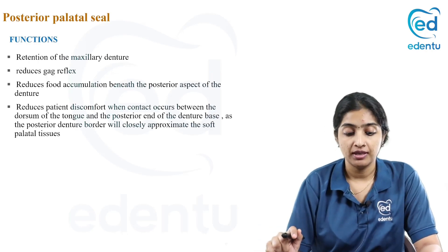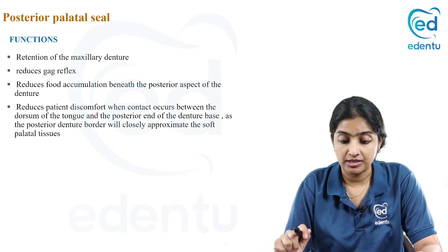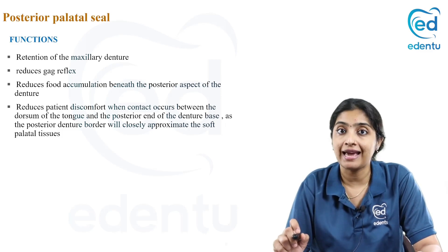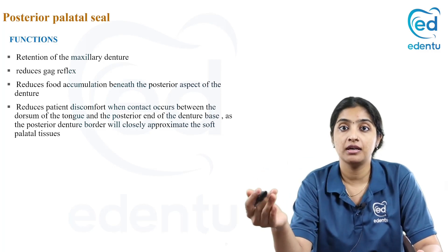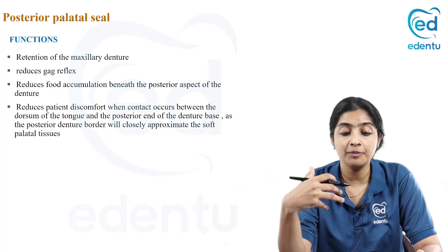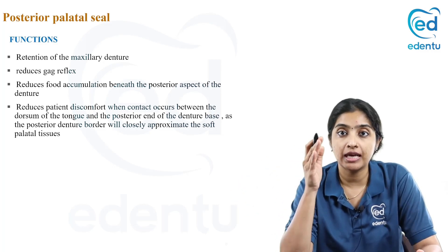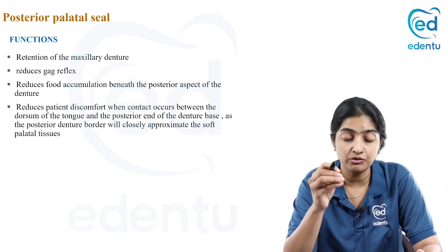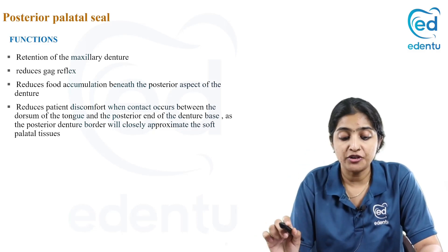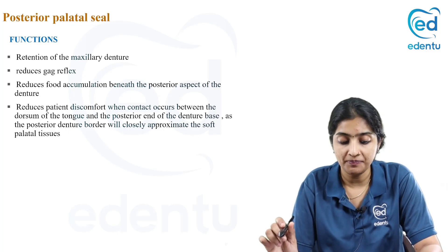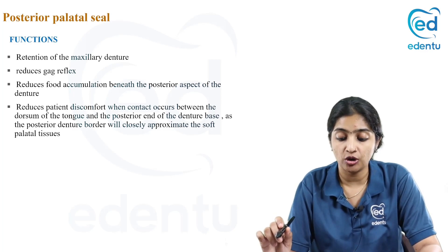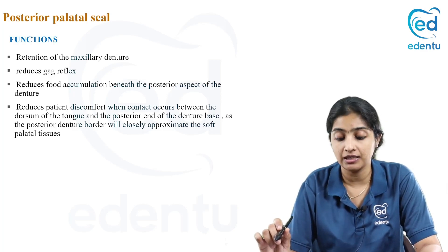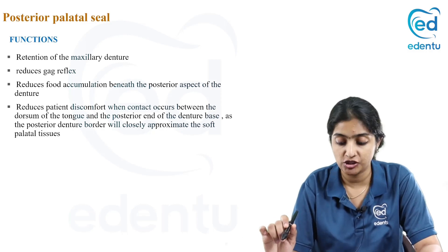Coming to the functions: retention of the maxillary denture, and it reduces gag reflex. If you extend the denture beyond the PPS, you will end up causing a gag reflex. So correct recording will reduce the gag reflex. It also reduces food accumulation beneath the posterior aspect of the denture, and patient discomfort can be reduced when contact occurs between the dorsum of the tongue and the posterior end of the denture base.